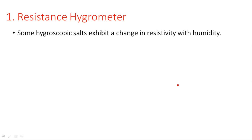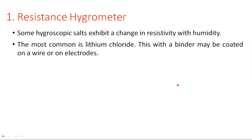In the measurement of humidity, when humidity changes, some hygroscopic salts exhibit a change in resistivity. The most common is lithium chloride. Lithium chloride changes its resistance property due to changes in humidity. Such materials are incorporated into the device so that changes in humidity or moisture affect the change in resistance, allowing us to measure humidity.